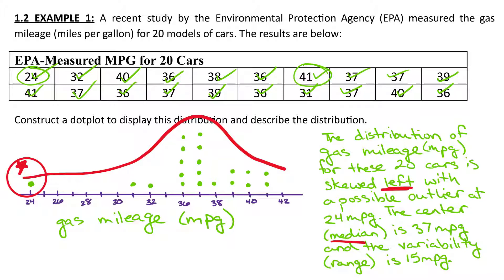The center, the median, this is going to be our middle value. Since we had 20 data values, we can count in. So 1, 2, 3, 4, 5, 6, 7, 8, 9, 10, 11. So my median is going to be right here. That's where I'm getting that 37 from.